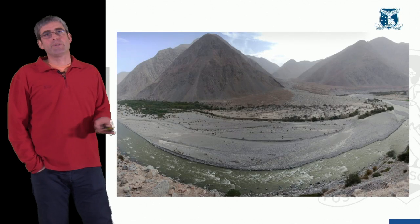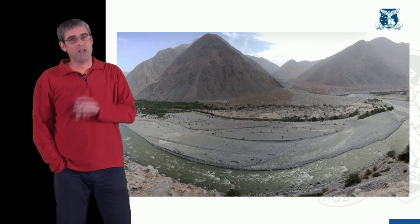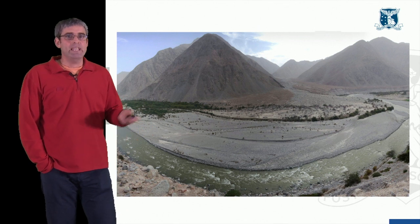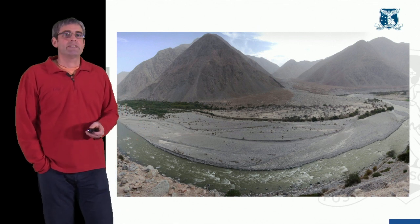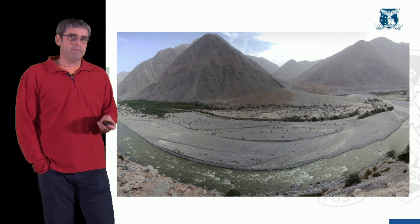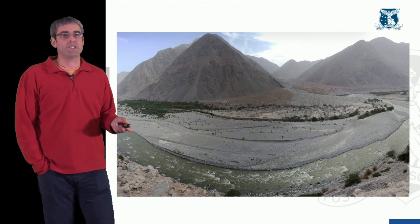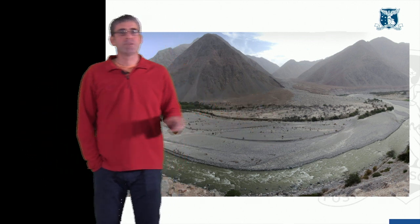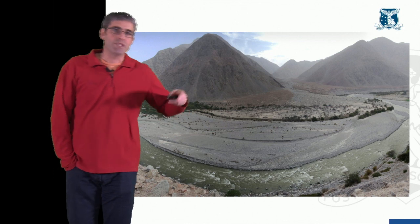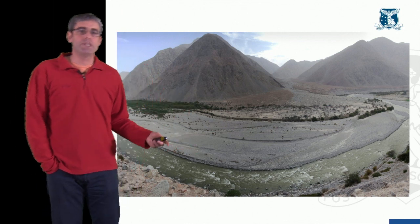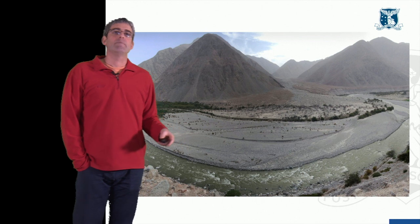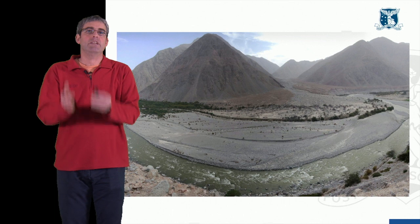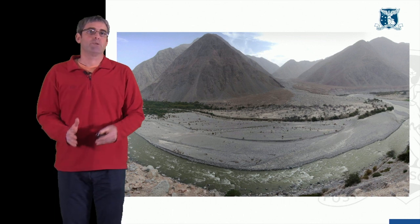Now let's work through some practical examples of rivers that are either supply limited or transport limited. In this particular river it's transport limited because there is plenty of sediment for the river to transport. We can see all the way along this meander bend — the point bar — these are loose gravels which have been transported by the river and deposited here. The river is competent to move these sediments, and the limitation on transporting them downstream is the capacity of the river to transport them. So it's transport limited.